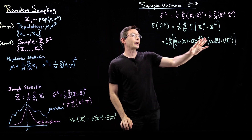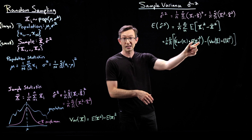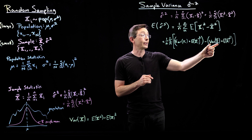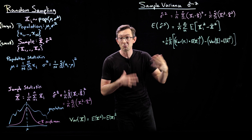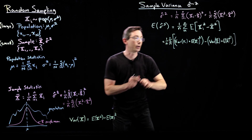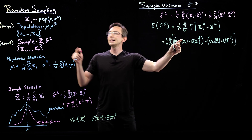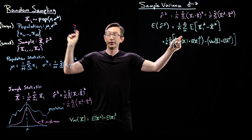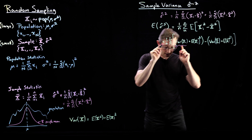Now why does this help? The nice thing is that I know expressions for all of these quantities. I have the expected value of x-bar, I have the variance of x-bar. The variance of any individual sample x_i is the population variance sigma squared, since it's sampled from the population.